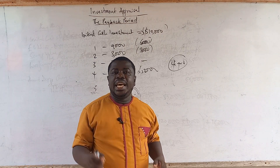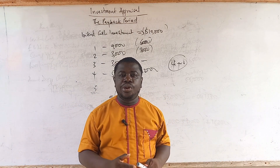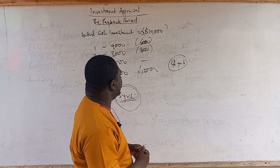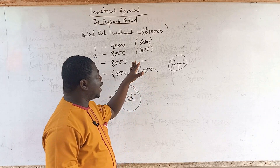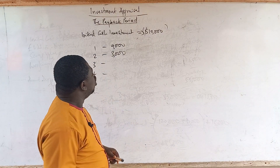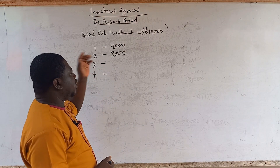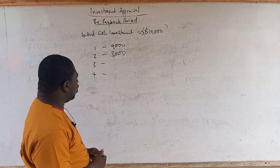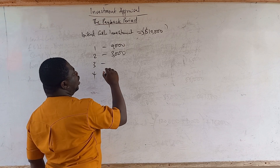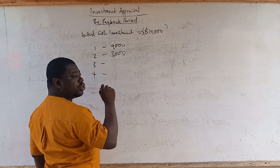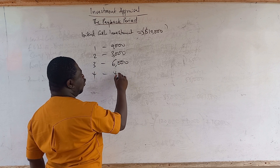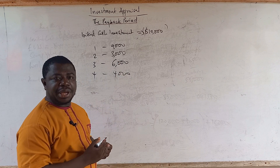It is not always that the payback period will be exactly in whole years. There are times it will be in months. For example, using the same approach, if at the end of year three the cash flow is 6,000 and year four is 4,000, what is the payback period?